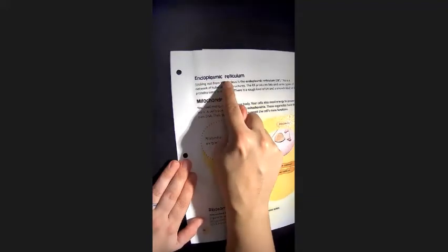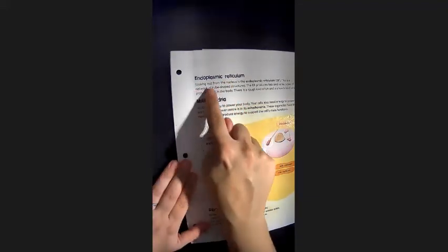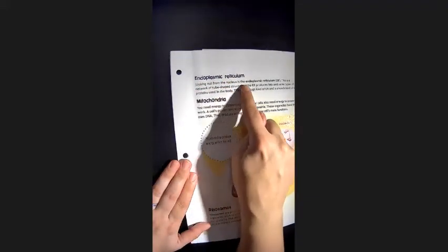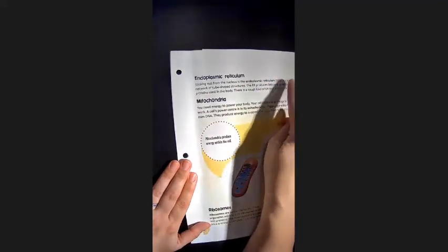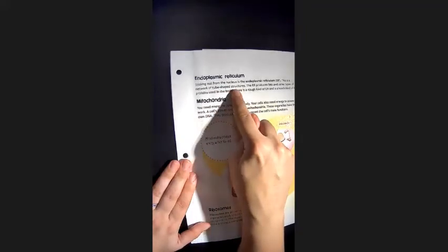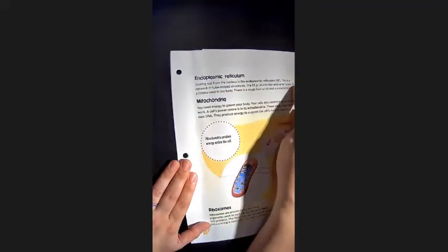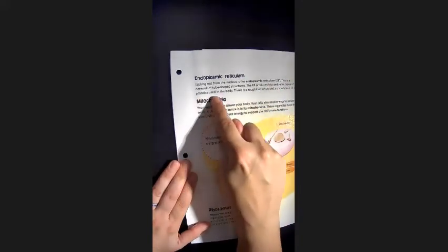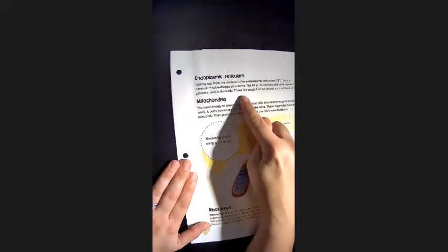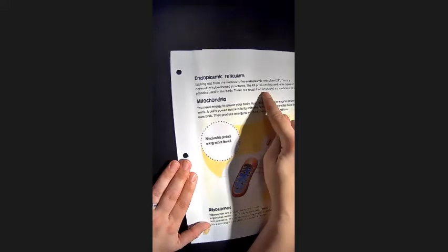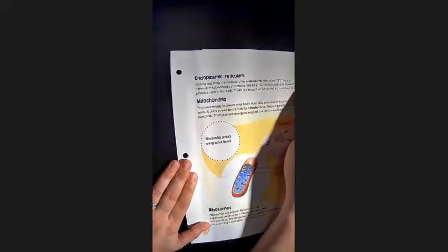Endoplasmic reticulum. Sticking out from the nucleus is the endoplasmic reticulum, ER. This is a network of tube-shaped structures. The ER produces fats and some types of proteins used in the body. There is a rough kind of ER and a smooth kind of ER.